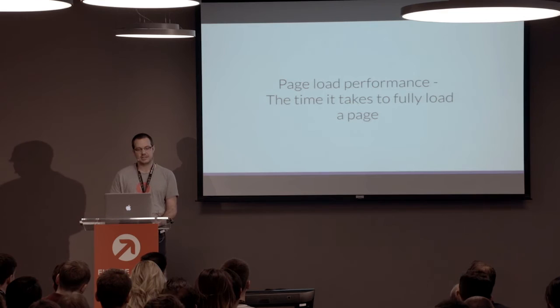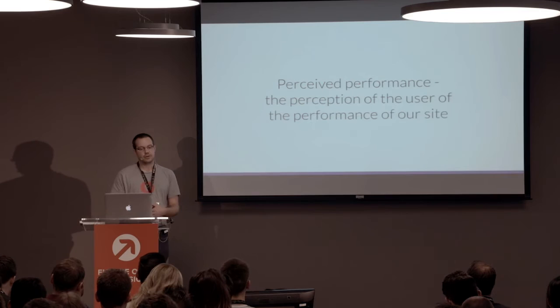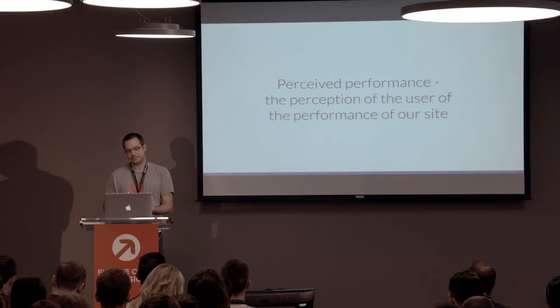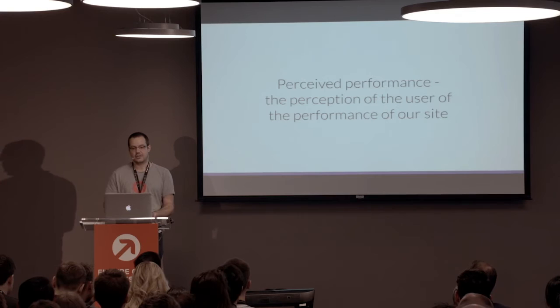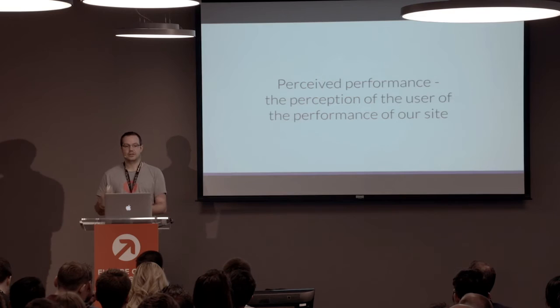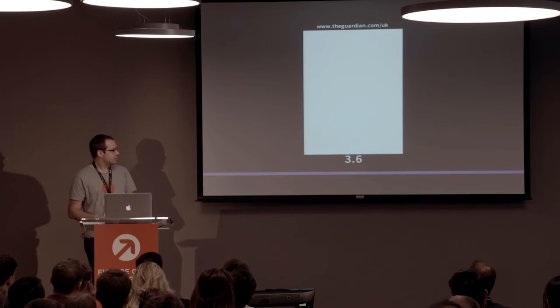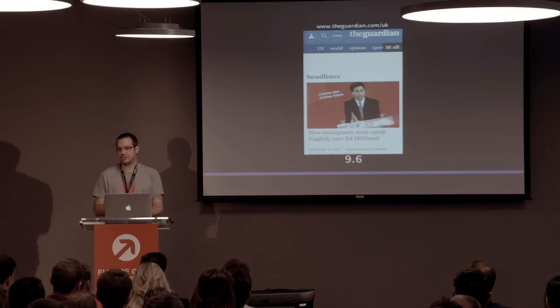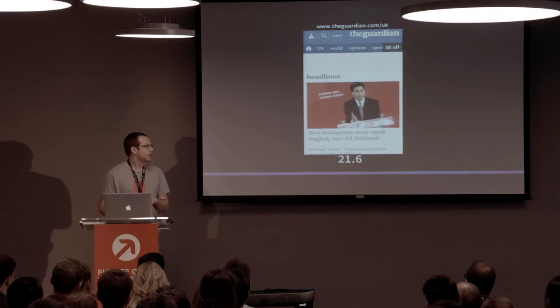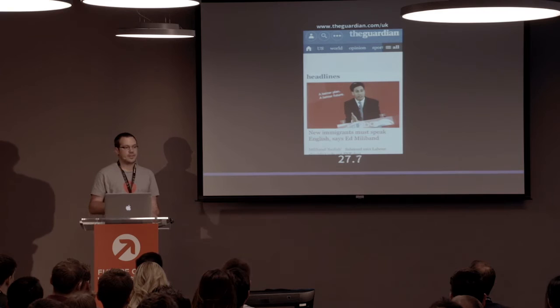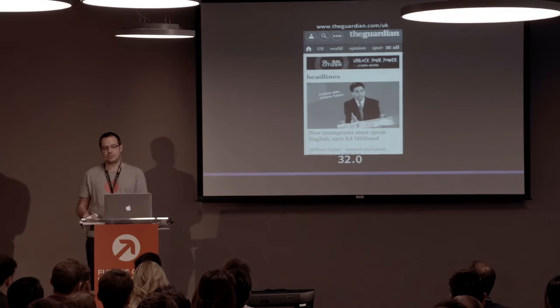There are two key types of performance important to a website. Page load performance is the time it takes to fully load a page, download all your assets, and render. Perceived performance is the user's perception of your site — the time it takes to start rendering your page and start getting to interact with it. We're going to look at a quick video of the Guardian site loading over a 3G connection using web page test, showing what a real mobile experience might look like. At four seconds you'll see the content comes in so the user can start reading the article. At seven seconds the imagery arrives. By loading images later, the user can start interacting earlier. The advert finally comes in at 32 seconds — they've made the active decision to delay loading the advert to last, which means the perceived performance of the website feels really fast.